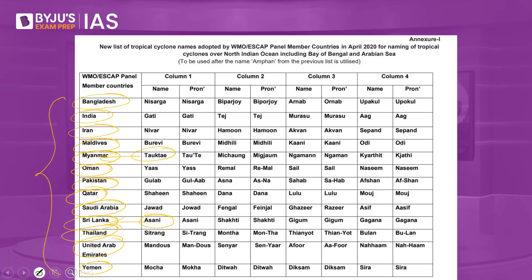How does the naming convention work? Each country provides a specified name. For example, Bangladesh had given a name called Nisarga. The names are arranged in alphabetical order of the countries — so whatever Bangladesh gives is the first name, whatever India gives is the second name, whatever Iran gives is the third name, and so on.